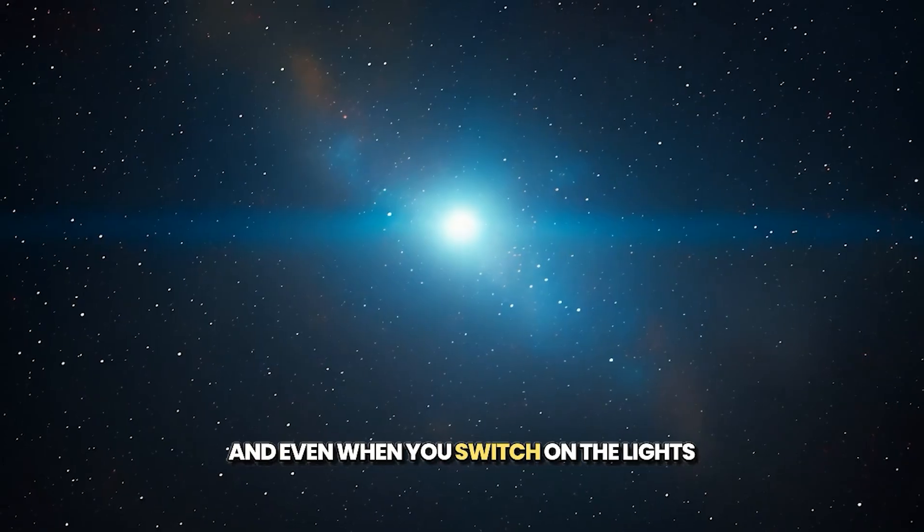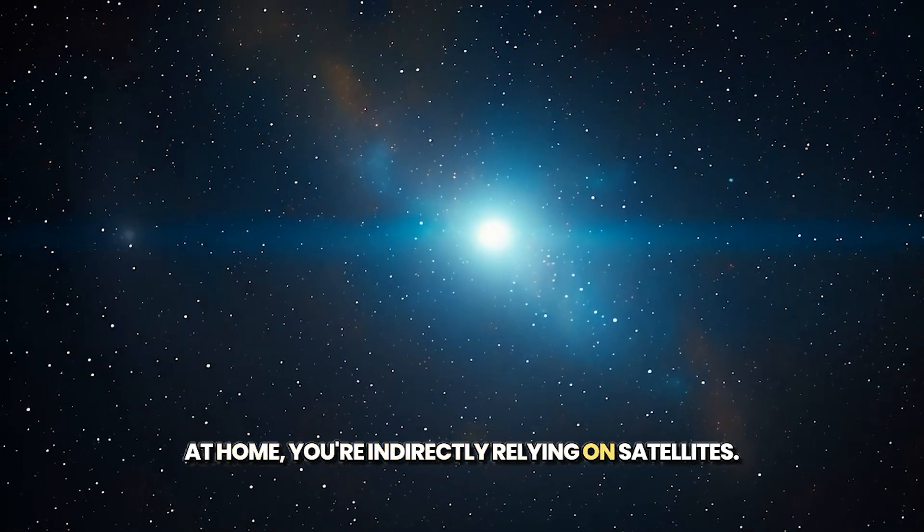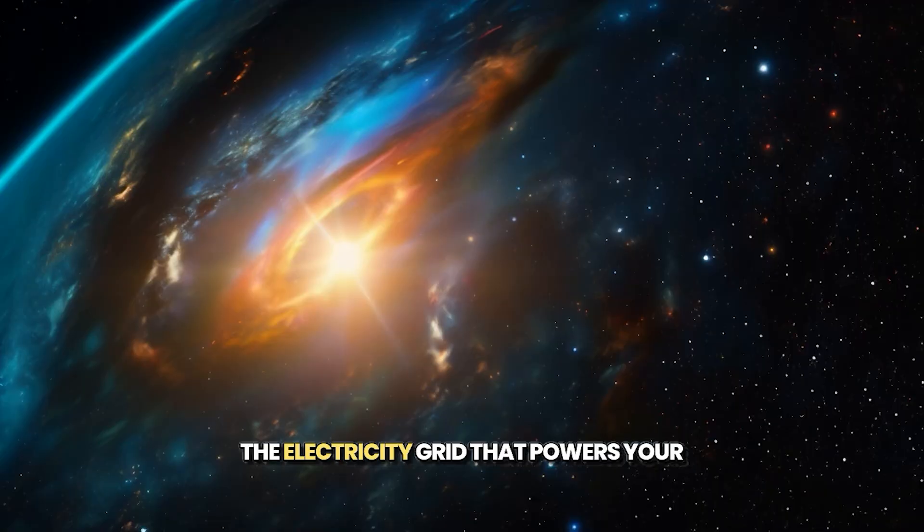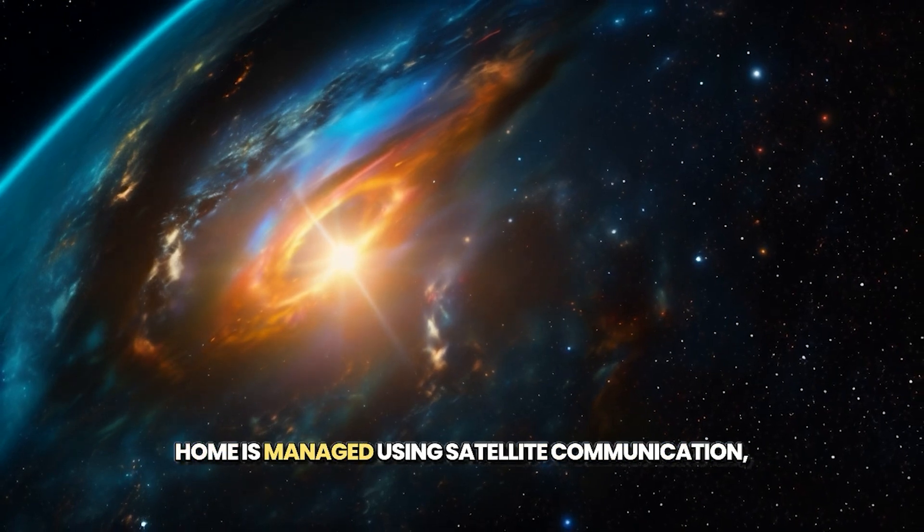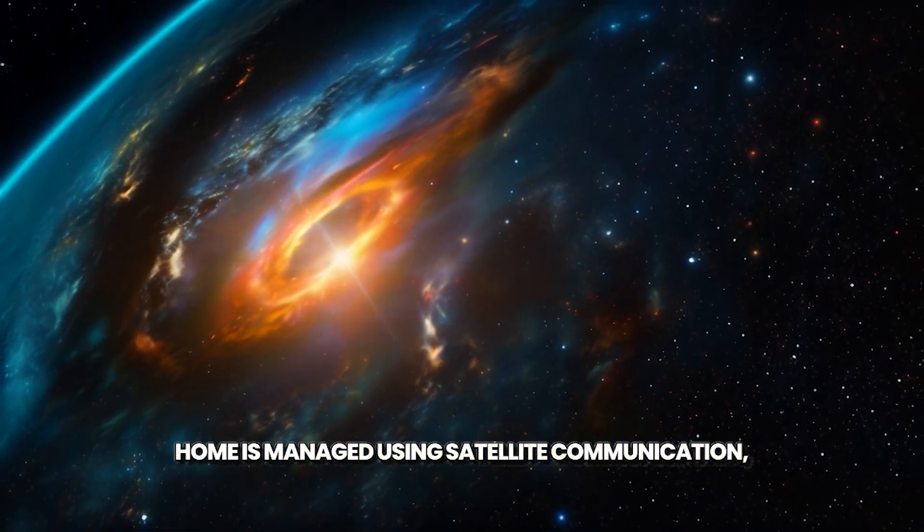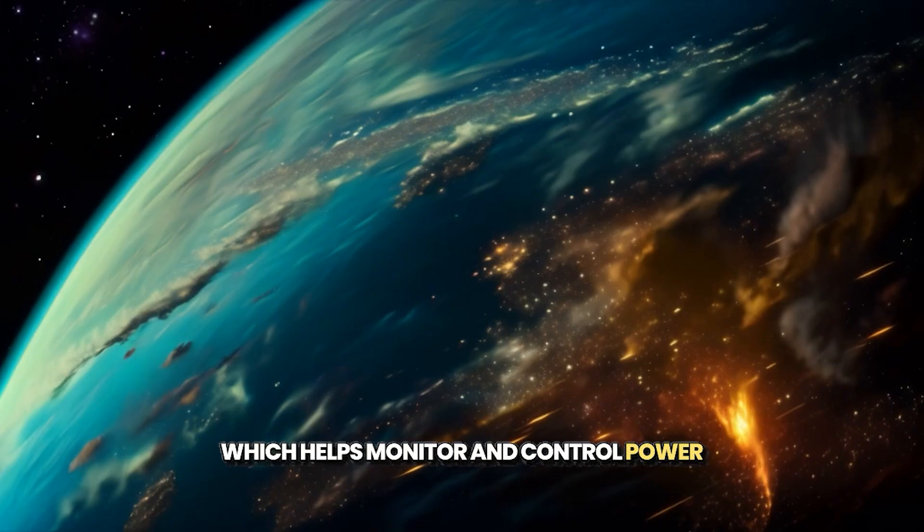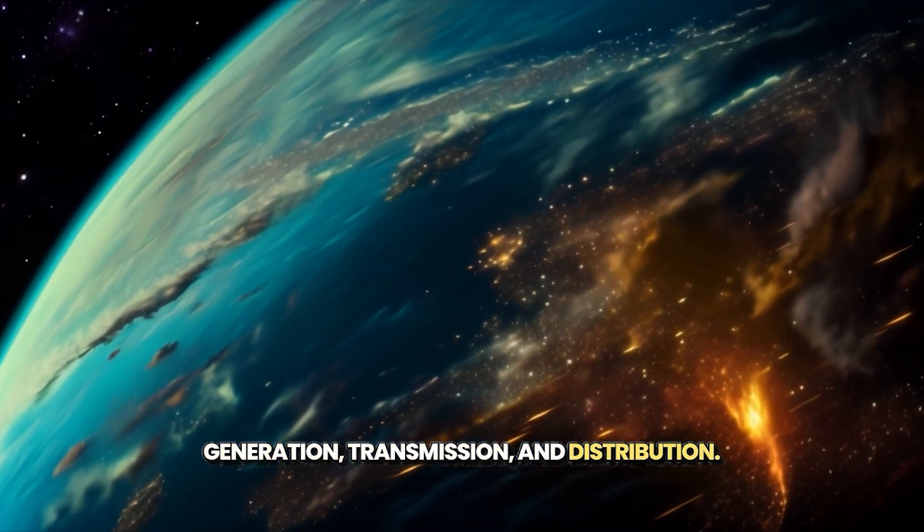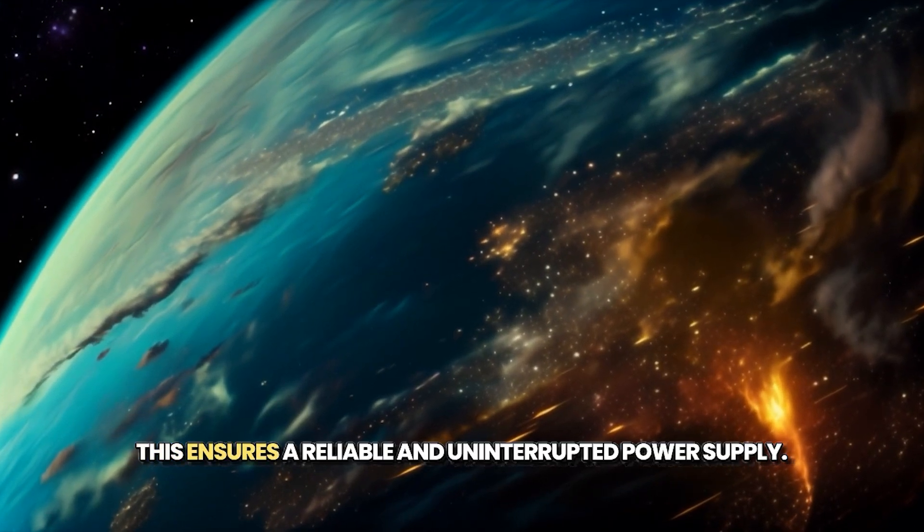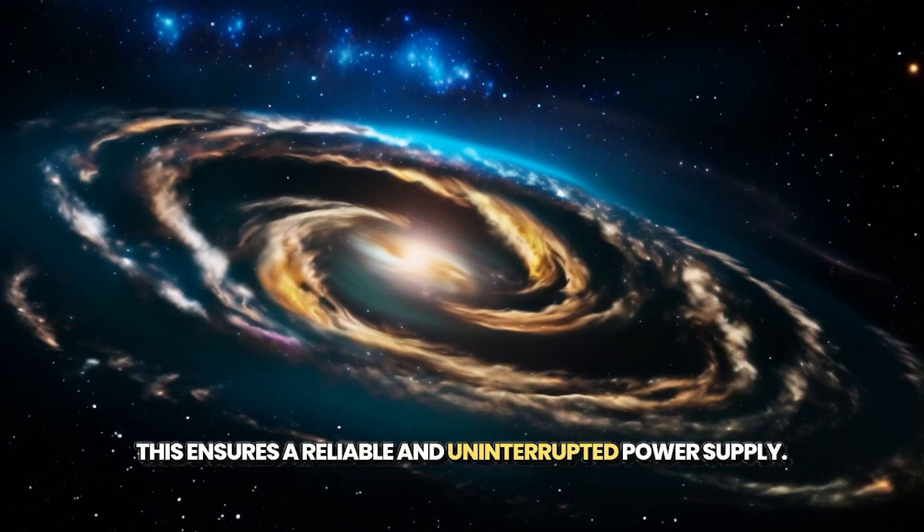And even when you switch on the lights at home, you're indirectly relying on satellites. The electricity grid that powers your home is managed using satellite communication, which helps monitor and control power generation, transmission, and distribution. This ensures a reliable and uninterrupted power supply.